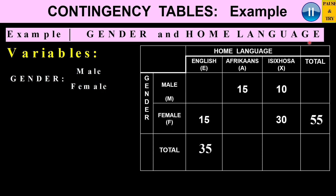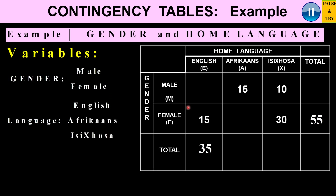Then we look at the other variable, which is home language, and there I've got three subcategories: English, Afrikaans, and Isizulu. So I've got gender in the rows and home language in the columns, and I've also got a total column and totals for the rows.